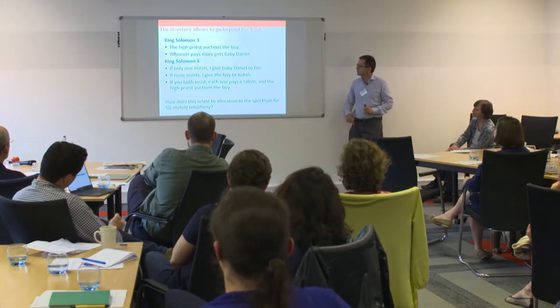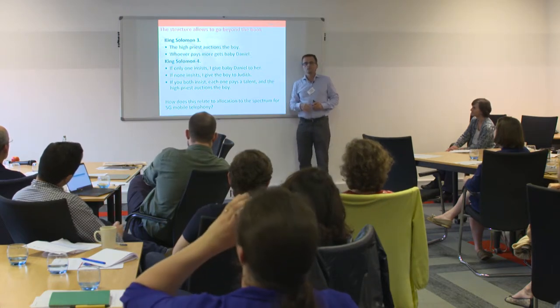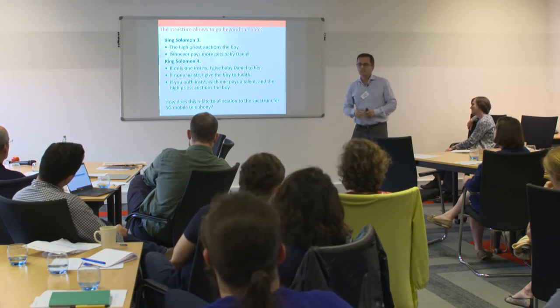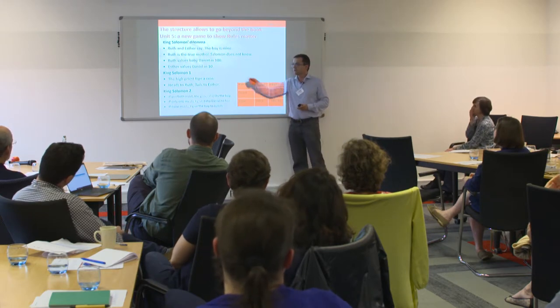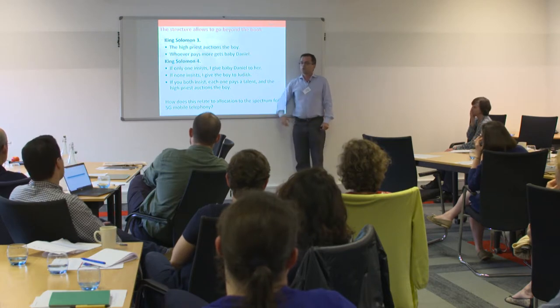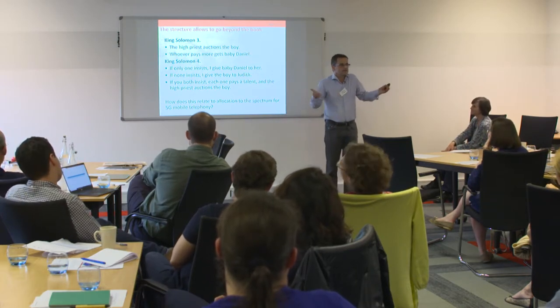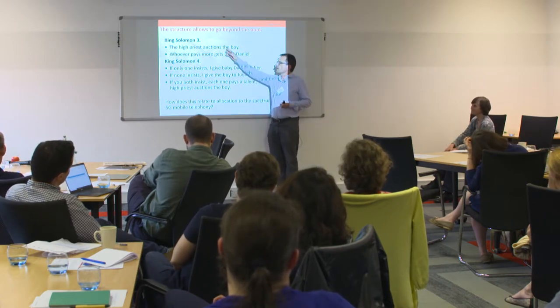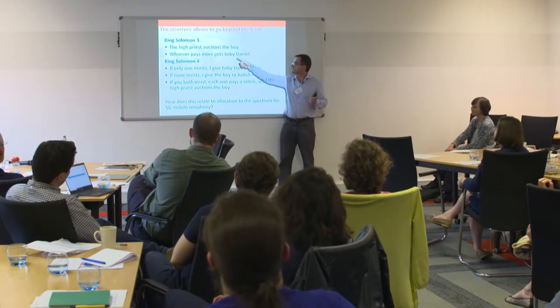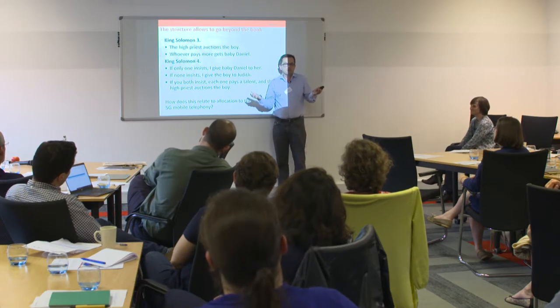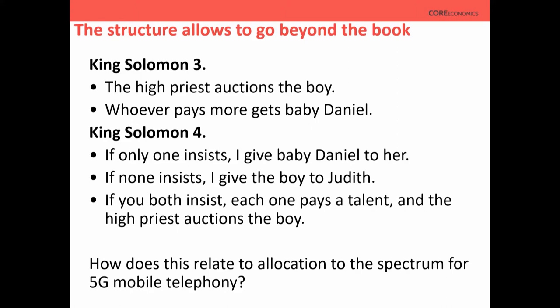King Solomon option three: just auction the boy. It goes to whoever values it most — Ruth. You could do a second-price auction; it doesn't matter, it gives the same valuation. The king even gets some money to build a bigger temple. That sounds nice and it is an efficient solution — the true mother gets the baby. But of course one could say the king will probably squander the money building a bigger temple, which is perhaps not the most efficient use.